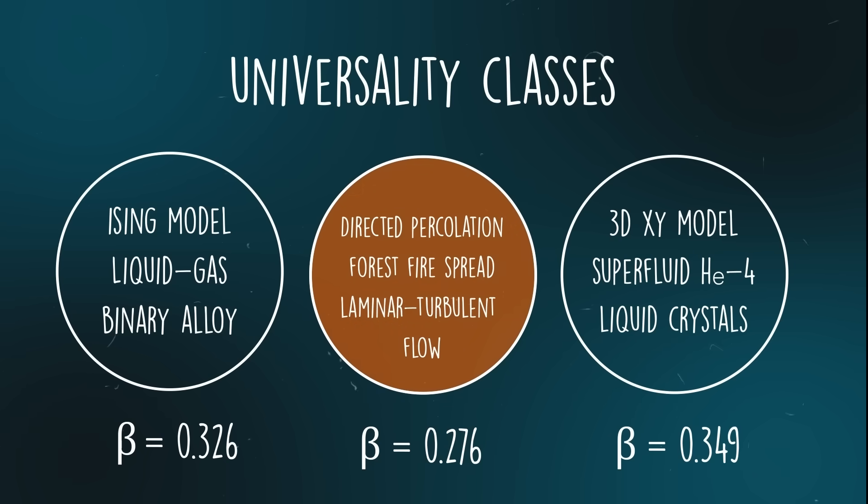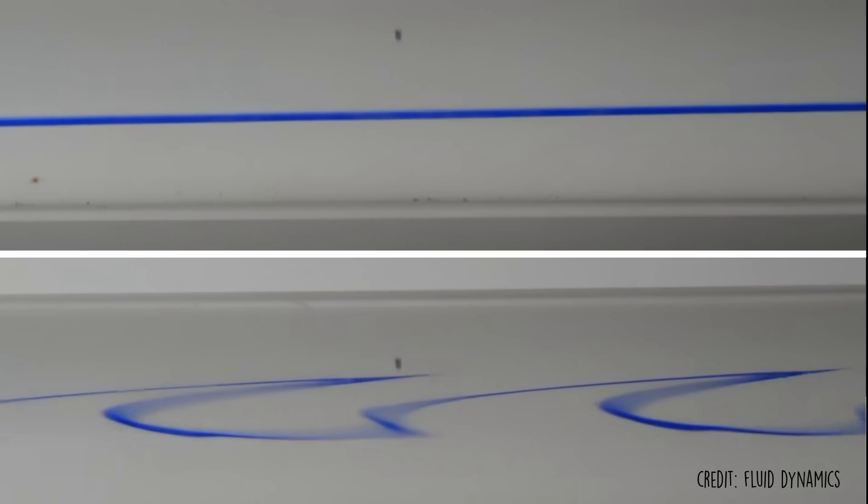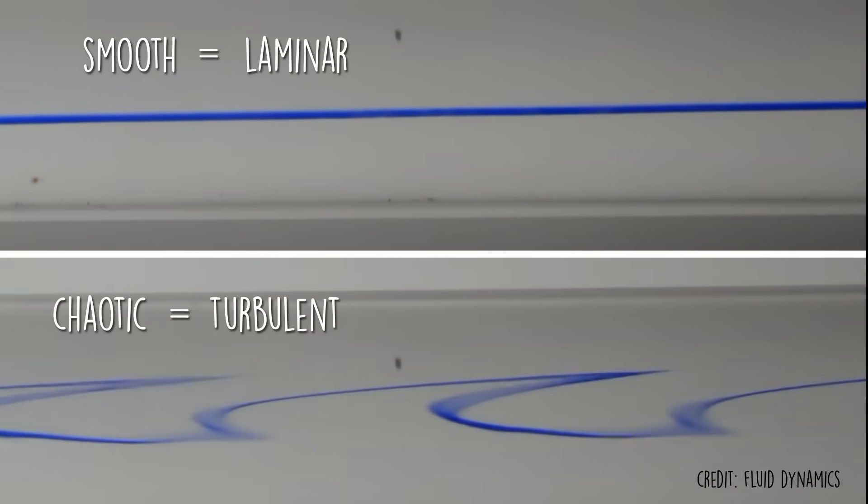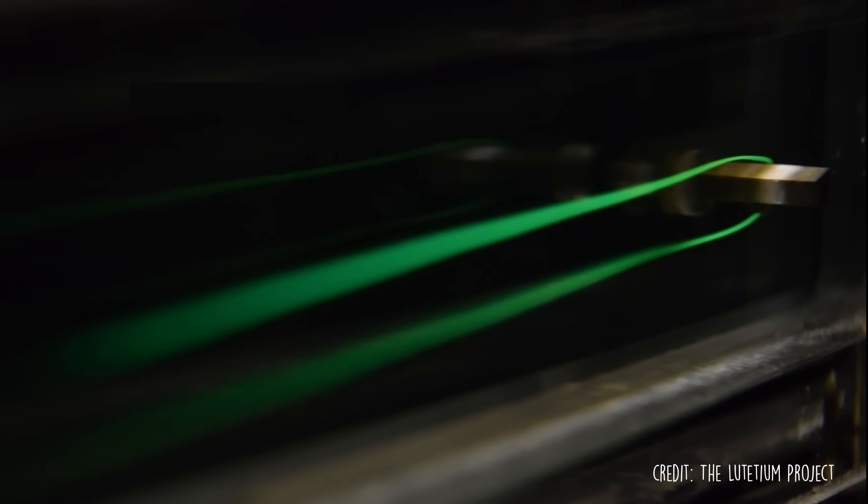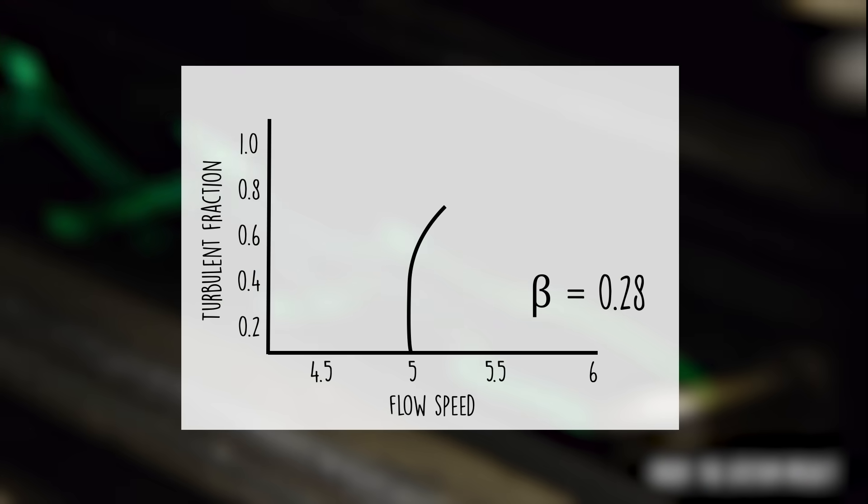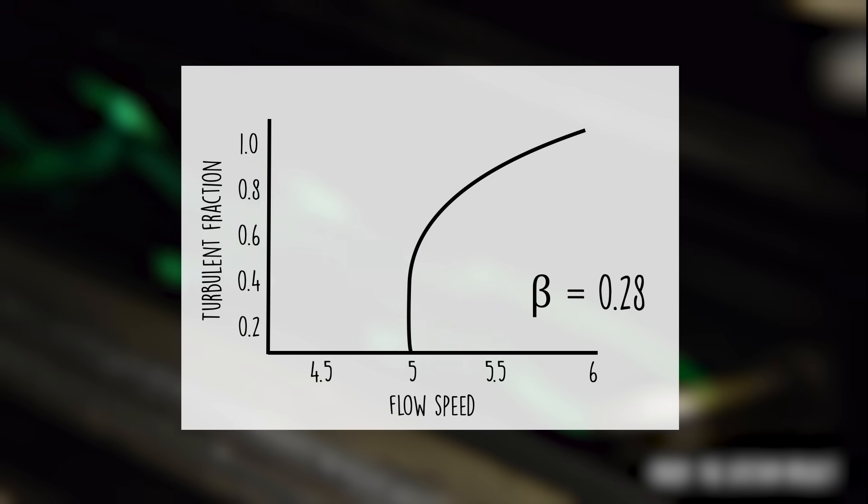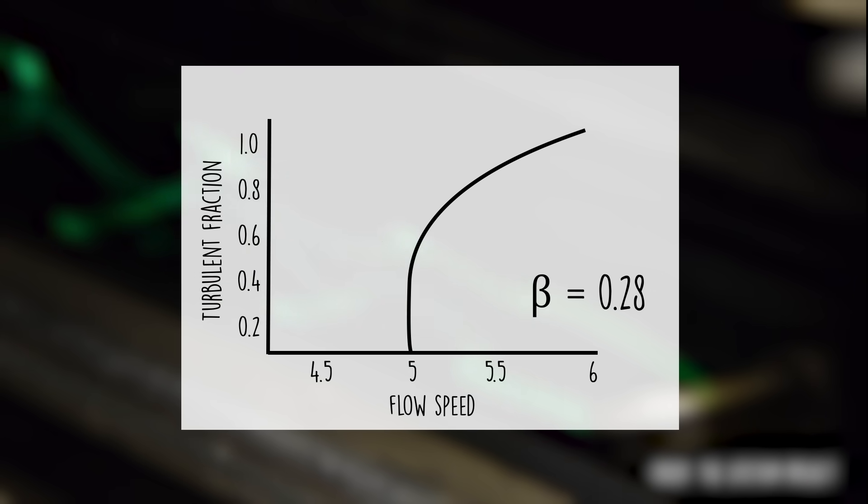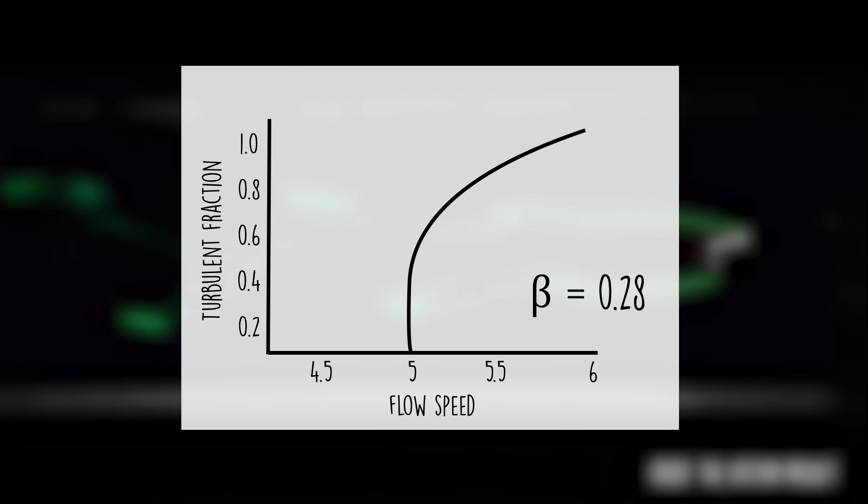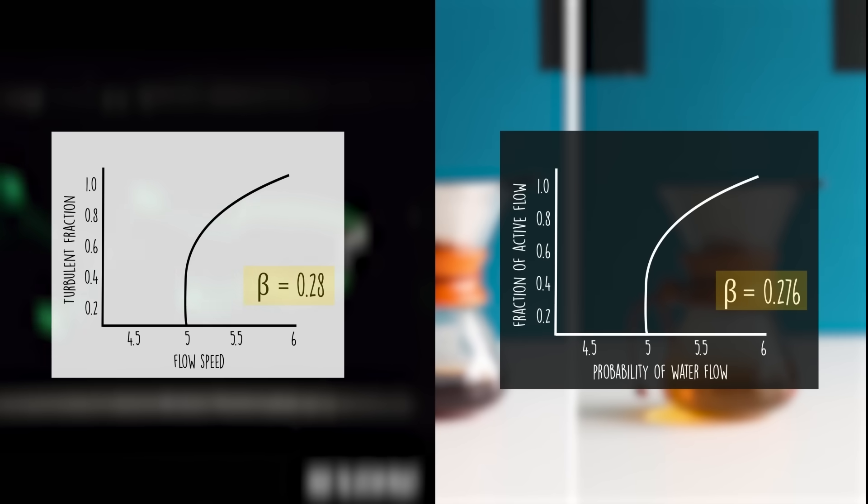One phenomenon that belongs to the directed percolation class is the transition of fluids from laminar to turbulent flow. A fluid can flow in two ways. Smooth, called laminar, and chaotic, called turbulent. A fluid transitions between these two states depending on its flow speed. Researchers have shown that for a certain geometry, the fraction of the flow that is turbulent obeys a power law with a critical exponent of 0.28, a value within experimental error of the critical exponent for drip coffee.